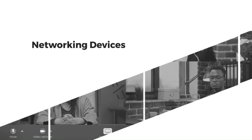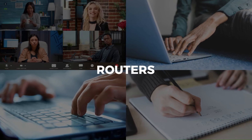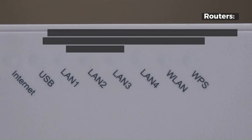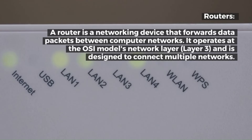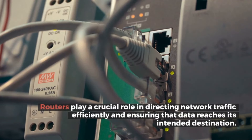A router is a networking device that forwards data packets between computer networks. It operates at the OSI model's network layer 3 and is designed to connect multiple networks. Routers play a crucial role in directing network traffic efficiently and ensuring that data reaches its intended destination.